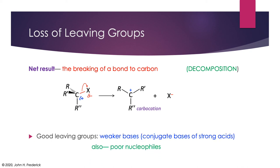Now, the good leaving groups might include things like weaker bases, the conjugate bases of strong acids. So those would be things like nitrate or chloride or sulfate, things like this that are weak bases. It also would include things like poor nucleophiles.